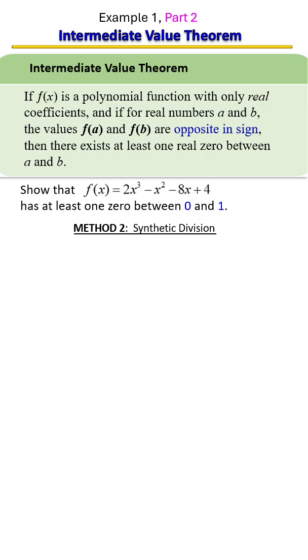If you're using the synthetic division, you're going to do it twice. The first time on the divisor you'll have a zero outside. The second time you do it, you're going to have a one outside. Let's go ahead and start the process. We'll start with the zero first.